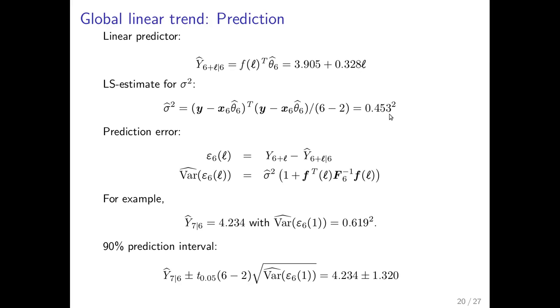And for the prediction error. Epsilon six of L. So when we shift time relative to this. We have the usual expression. Like this. Sigma hat squared. Times one plus f transpose of L. The F_6 inverse. And then lowercase f of L again. As an example. You can see the typical example. Is to make the one step prediction. Which gives us 4.234. With a variance estimate of 0.6189 square.